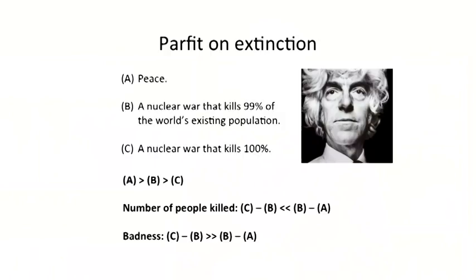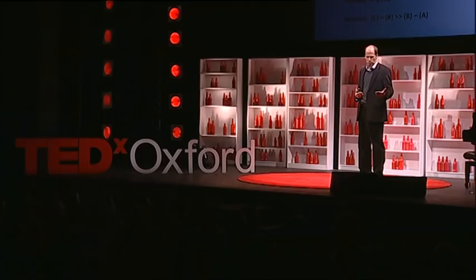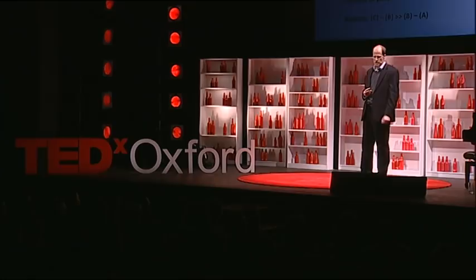However, it is a different question that is more relevant to our decision making: how big is the difference in the badness of these three scenarios? And here the order is reversed. Parfit argues that the difference in how bad C is versus how bad B is far greater than the difference between B and A. Because if C comes to pass — if 100% of everybody dies — it is not just a massive number of people killed, but the entire future is destroyed. If B occurs, by contrast, you might eventually climb back up and have as many people living in the future as would have lived anyway.